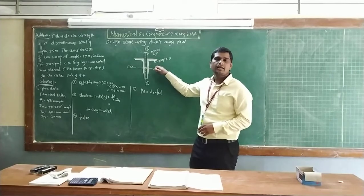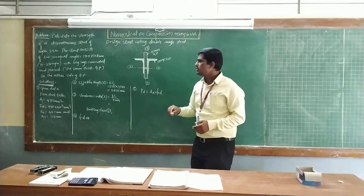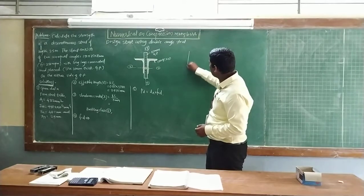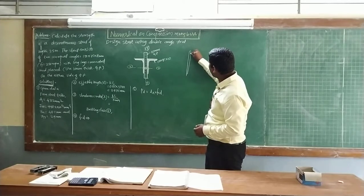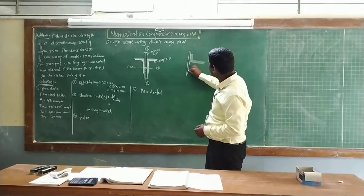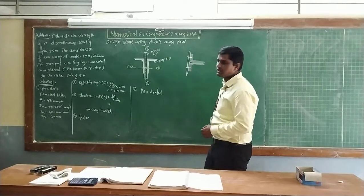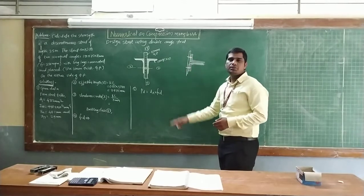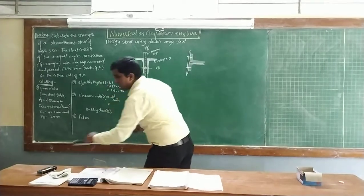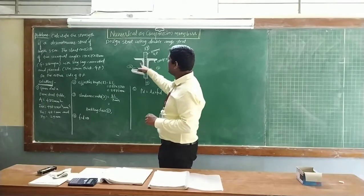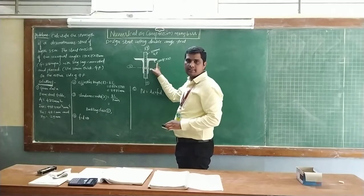Again, the next numerical has both angles placed on the same side. For example, this is the gusset plate and the angle section may be placed like this. So there will be a connection. These are mainly two types of numericals that may be asked on double angle struts. We are going to learn the first type where both angle sections are placed back to back on either side.